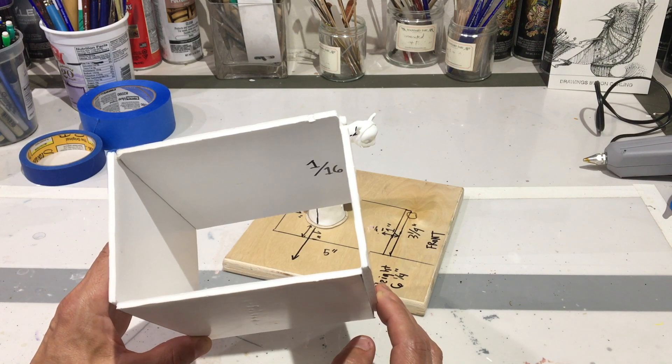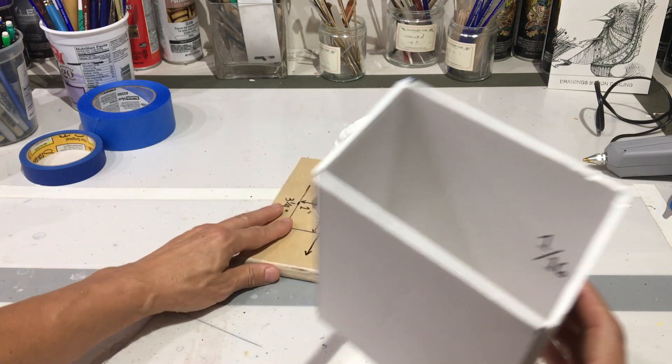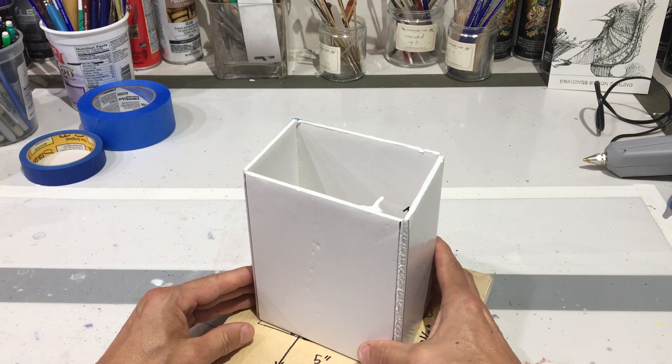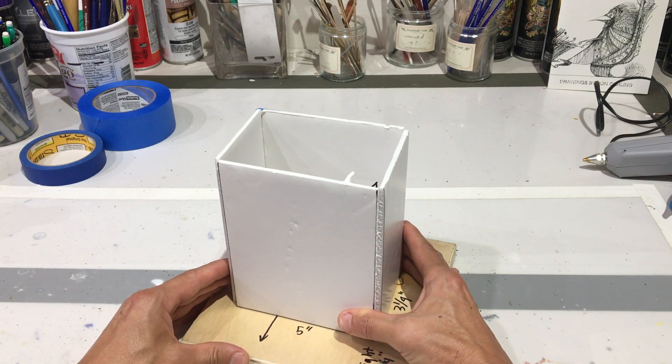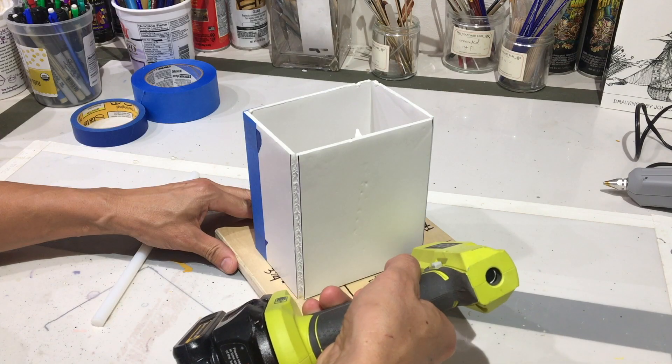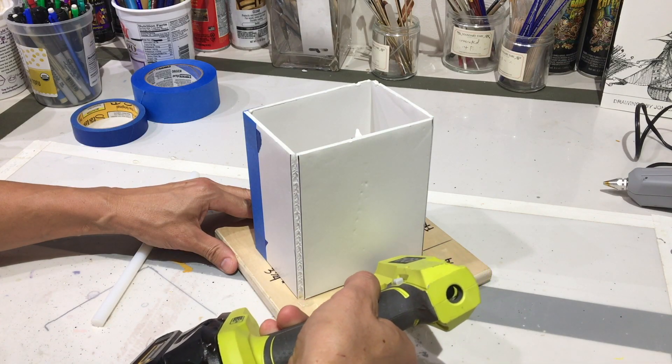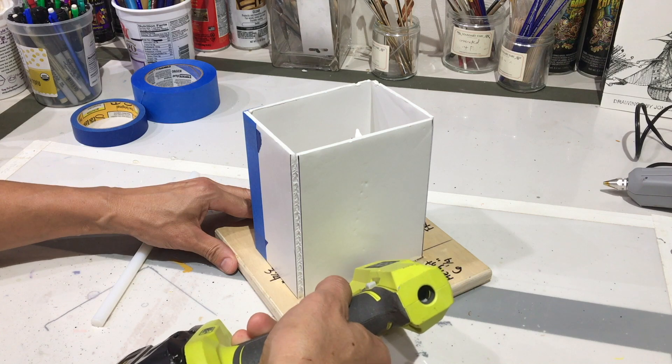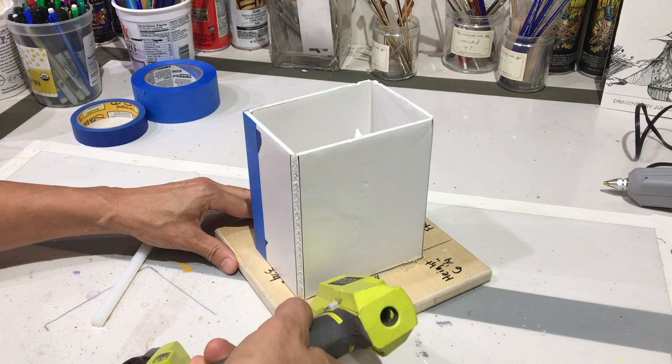But now what we're going to do is just glue this around the piece and then mix up the silicone and pour the mold. Make sure you run a solid bead of glue around the bottom of the box. You really want to make sure it's completely attached to the board.